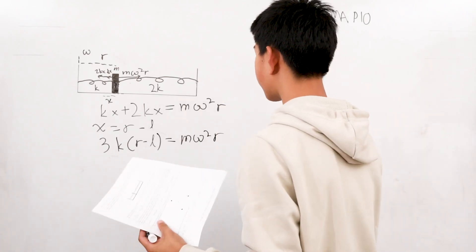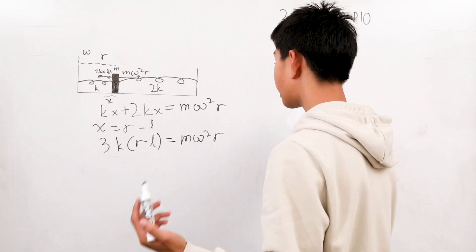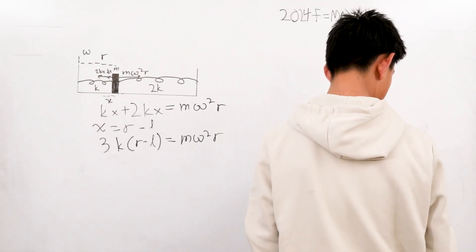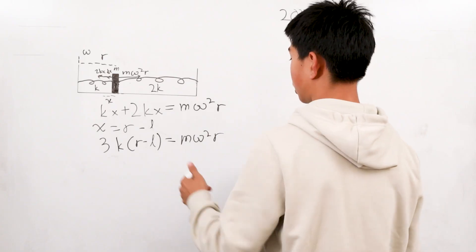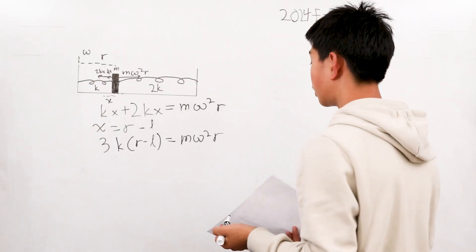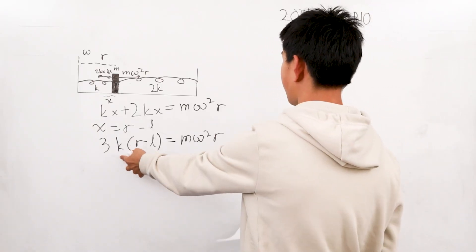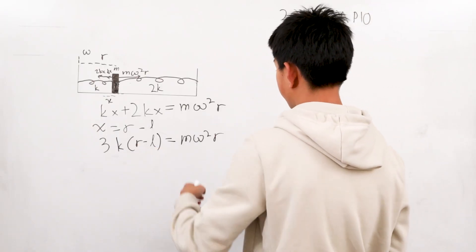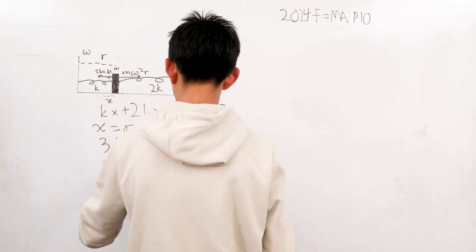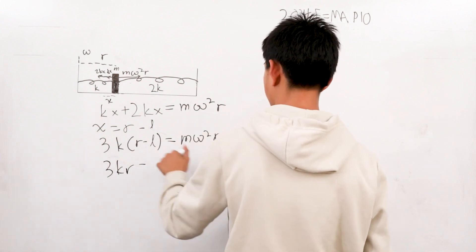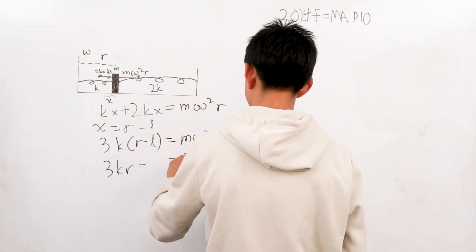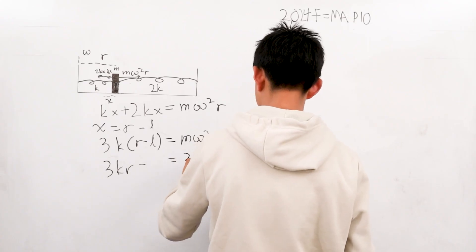So now that we have this, we can see something right here. What we can really rewrite it is we want the same variables on each side, right? So if we multiply this out, we get 3KR minus 3KL. We have to subtract this other side, we just want the L out of this, 3K times L.